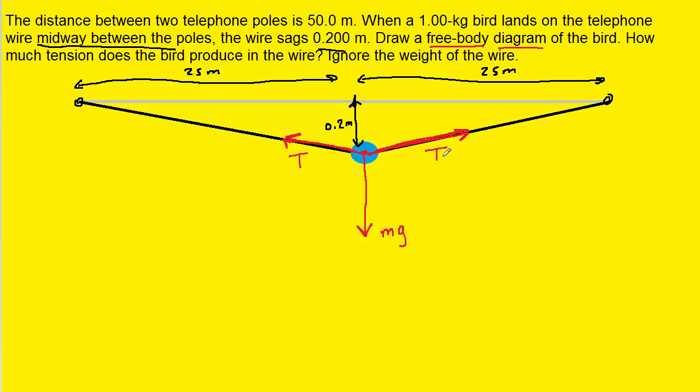You'll notice we're not calling the tension forces T1 and T2, because if we did that, that would mean the tensions were different. But because of the symmetry of this scenario, the tension in the left side of the wire is going to equal the tension in the right side of the wire, so we're just going to label them T. In fact the question is asking us to figure out how much tension the bird produces in the wire, so we're asked to calculate the value of T.